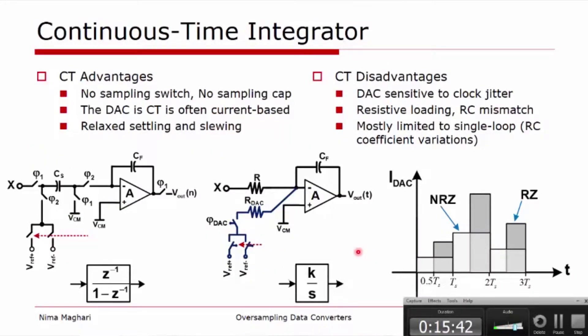Now, the last thing I want to also mention is that although I showed mainly the discrete time, recently there's been much more work on continuous-time delta-sigma modulator. As shown here, the continuous-time delta-sigma modulator uses a continuous-time integrator. It has several key advantages over the discrete counterpart because it has no sampling switches, therefore no sampling capacitor. The DAC is often continuous-time, it's either resistive-based or current-based, and it relaxes the settling and slewing.